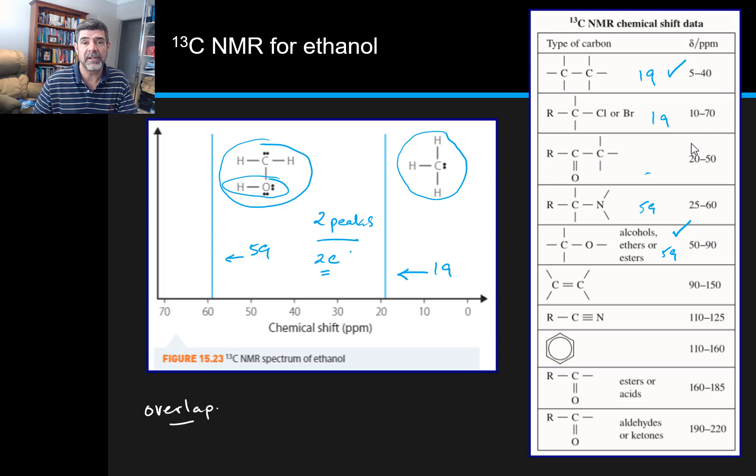One extra piece of information that we can use to help us identify what's going on here is to also look at the proton NMR or the hydrogen-1 NMR for ethanol. So here is the proton NMR for ethanol.